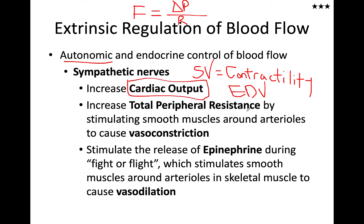Additionally, besides stroke volume, we have heart rate — simple enough — and the sympathetic nervous system speeds that up. In the periphery, all of our arterioles are innervated by sympathetic neurons, and at all times these sympathetic neurons are generating action potentials.